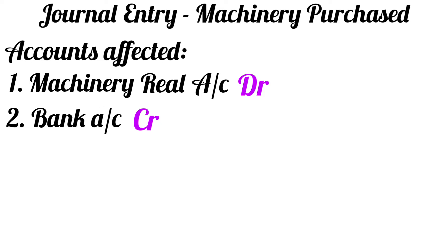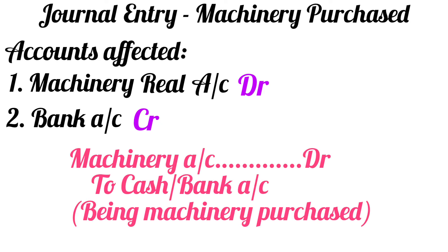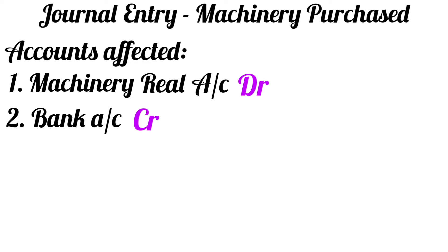Let us say you are not aware whether the payment is made in cash or by check. In that case, you can write the journal entry as machinery account debit to cash/bank account, and you can write the narration as: being machinery purchased.